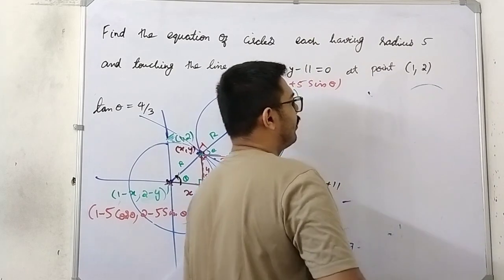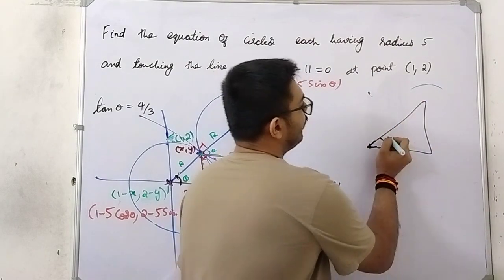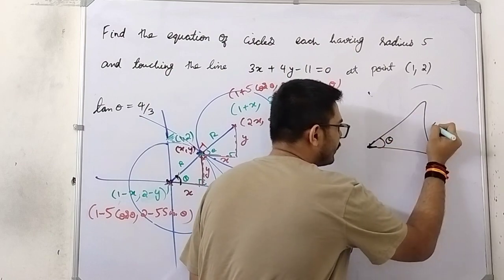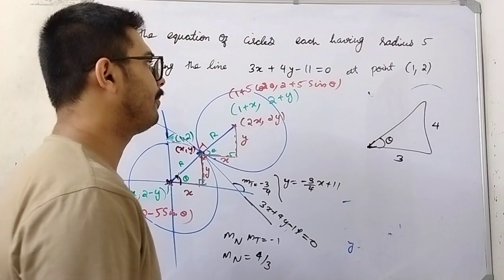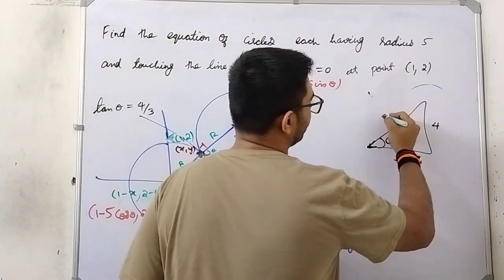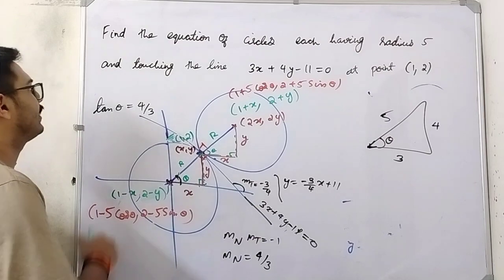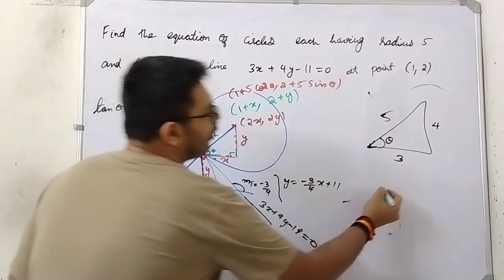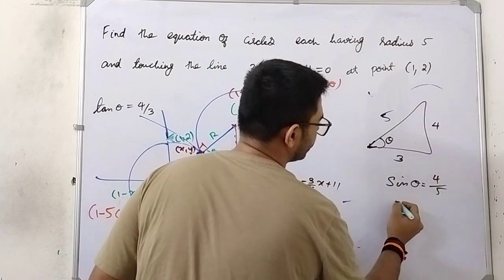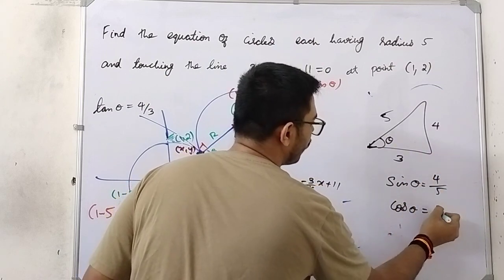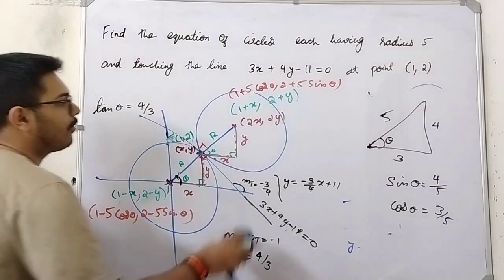If tan θ = 4/3, draw a right triangle where the opposite side is 4 and the adjacent side is 3. Applying the Pythagorean theorem, the hypotenuse becomes 5 units. So sin θ = opposite/hypotenuse = 4/5, and cos θ = adjacent/hypotenuse = 3/5. Now you can find the center points.